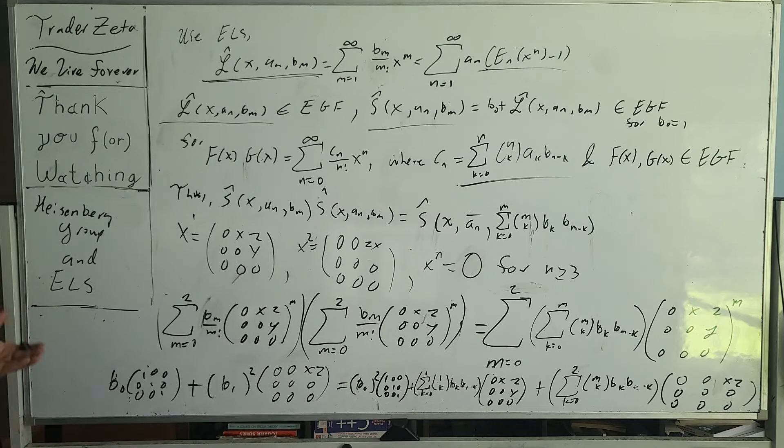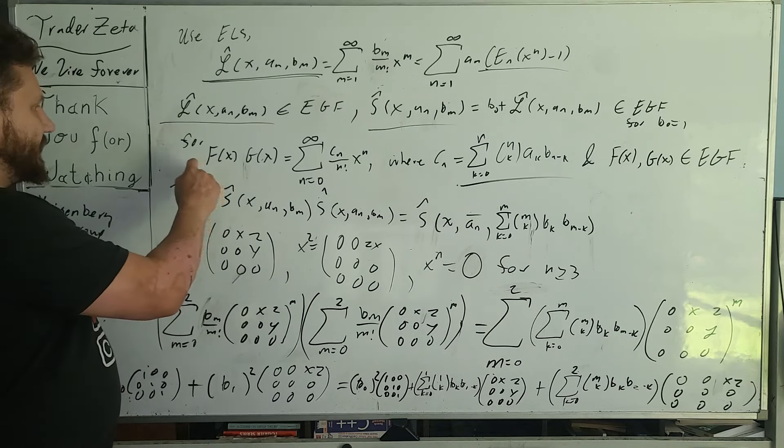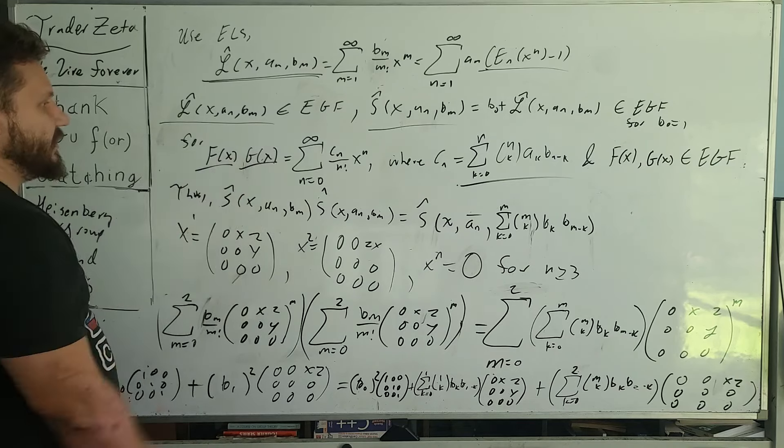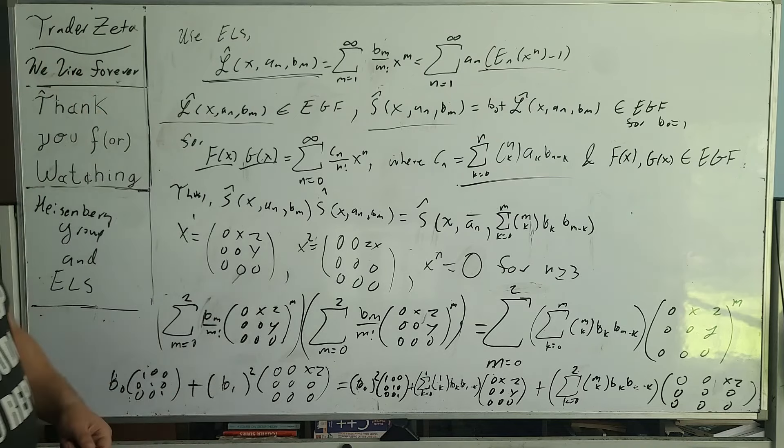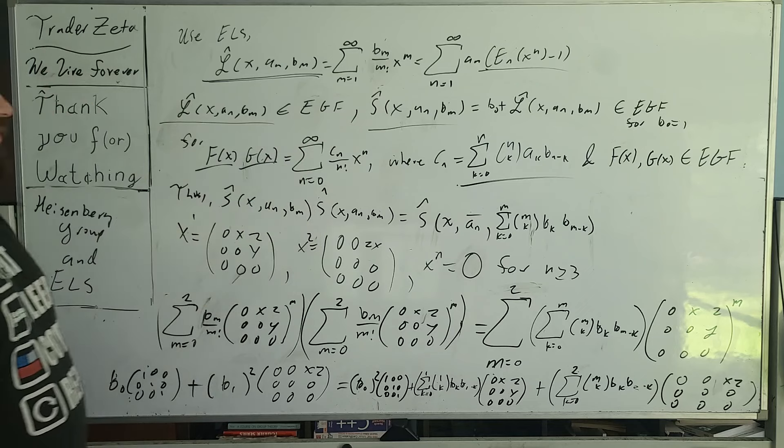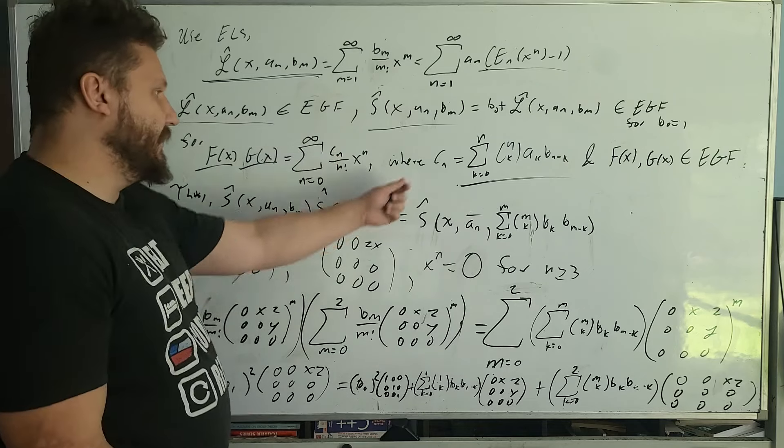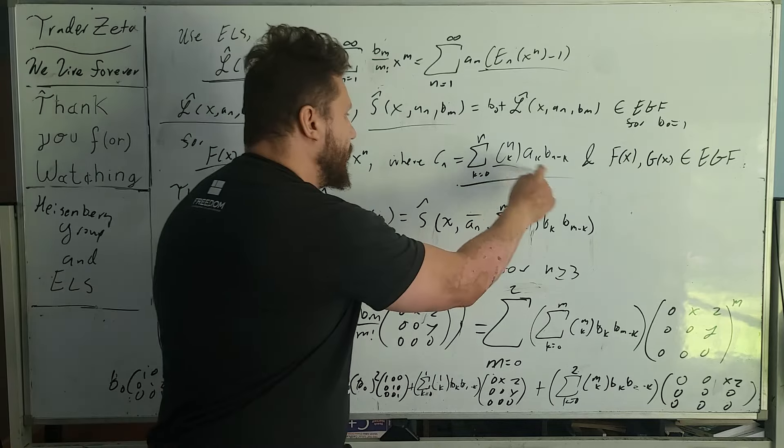Now, in the exponential generating function world, we have a whole bunch of cool identities that we can exploit. Say, for example, you have an eGF here and an eGF here, and you multiply them together. You actually get a very smooth and clean representation of a new exponential generating function. For c sub n, you have this relationship right here. And these are the binomial coefficients.